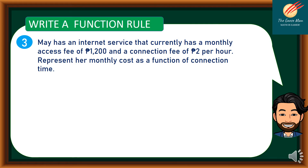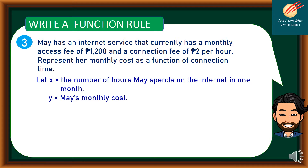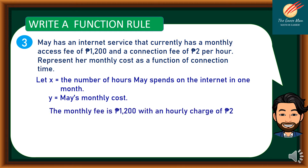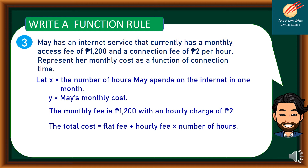For example number 3: May has an internet service with a monthly access fee of 1,200 pesos and a connection fee of 2 pesos per hour. Represent her monthly cost as a function of connection time. We let x equal the number of hours May spends on the internet in one month, and y be May's monthly cost. The total cost equals the flat fee plus the hourly fee times the number of hours, so f of x equals 1,200 plus 2x.